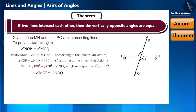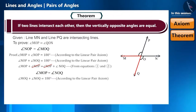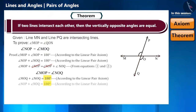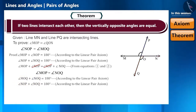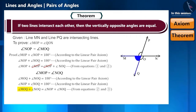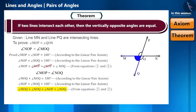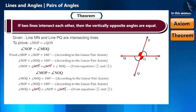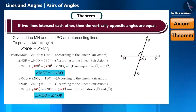Keeping ray OQ in mind, angle MOQ plus angle NOQ equals 180 degrees by the linear pair axiom. Taking ON as the ray, angle NOP plus angle NOQ also equals 180 degrees. Since the right-hand side is equal, the left-hand sides are equal too: angle MOQ plus angle NOQ equals angle NOP plus angle NOQ. Cancelling angle NOQ from both sides gives angle MOQ equals angle NOP. In this way, we proved that the vertically opposite angles formed by the intersection of two lines are equal.